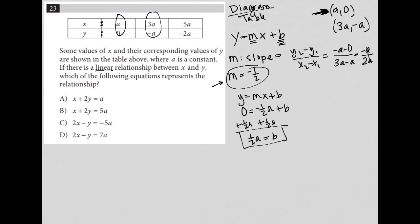So then I go back to my Y equals MX plus B, keeping Y, but replacing M with negative one half and replacing B with positive one half A. So lastly, I want to see, well, all the answer choices are in standard form. So I'm going to multiply the entire equation by two, which will give me two Y equals negative X plus A.